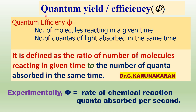An important term used in photochemistry is quantum yield or quantum efficiency, phi. That is the number of molecules reacting divided by the number of photons of light absorbed in the same time. For example, if one photon of light is absorbed and one molecule reacted, then phi equals 1.